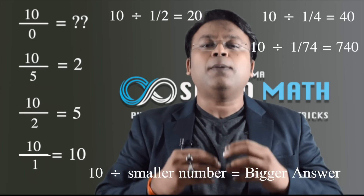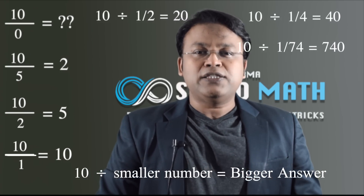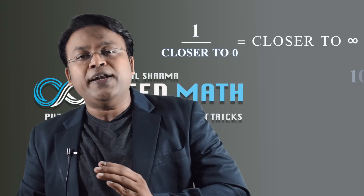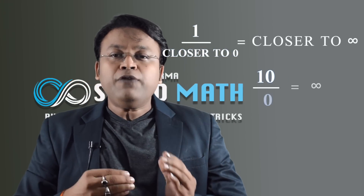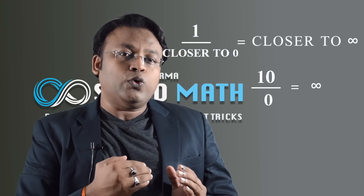Every time you divide by a smaller number, you get a bigger number in return. That is, the closer your divisor gets to 0, the closer your answer gets to infinity. So if you were actually to divide 10 by 0, would you get infinity? Not exactly.